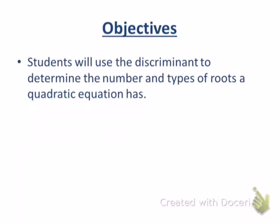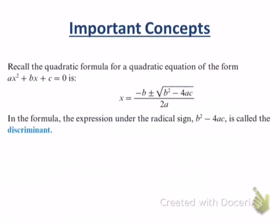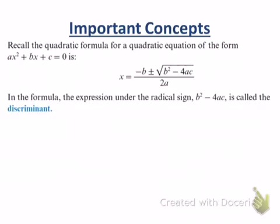We have talked about the discriminant. I've mentioned it some. I know I've had some conversations on an individual level with some of you about the discriminant. But here are some important facts. This is Lesson 113. Important concept. Recall that the quadratic formula for a quadratic equation of the form ax² + bx + c = 0 is x = (-b ± √(b² - 4ac)) / 2a.